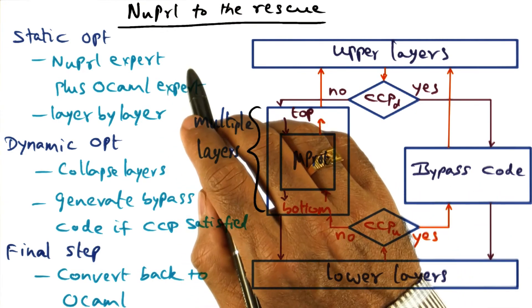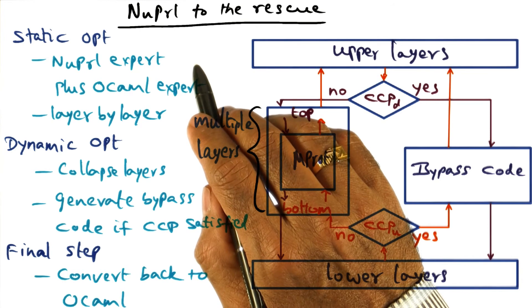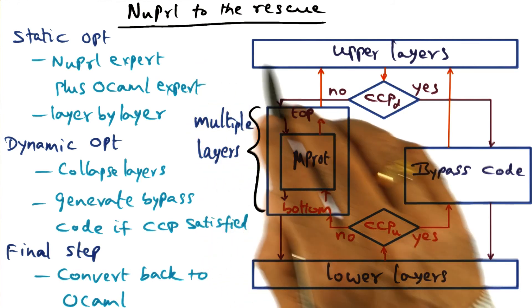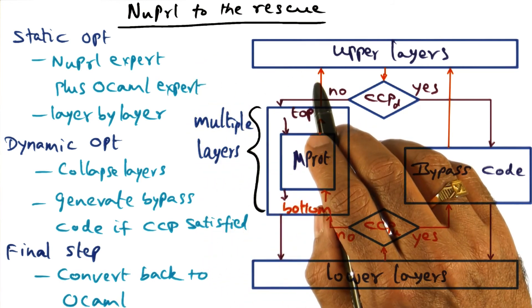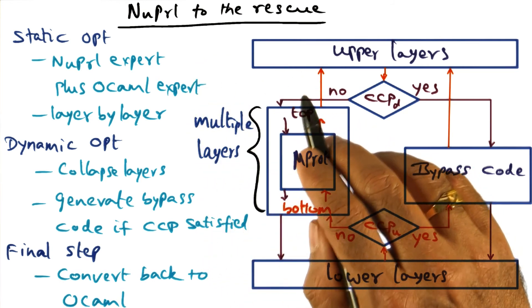This exercise has shown the path to synthesizing complex system software: starting from specification, to implementation, to optimization — putting theory and practice together.